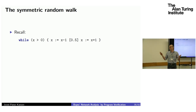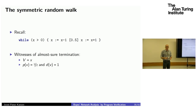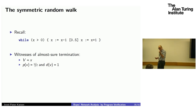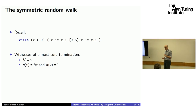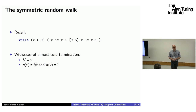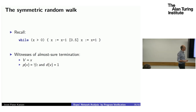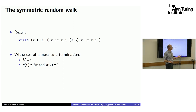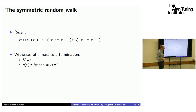Applying this to the symmetric random walk: the ranking function V is the position x. The observation is that in every iteration, with probability one half, position changes by one. This satisfies all the conditions of the proof rule. Note: I'm not claiming I can automate finding V — in this example it's easy to find, but we're not automating the discovery of V.